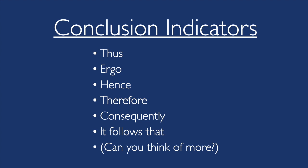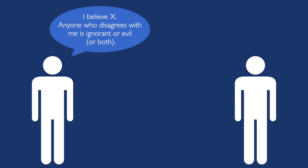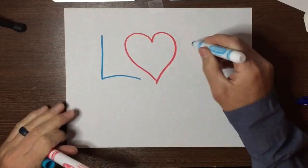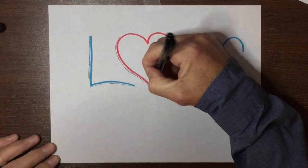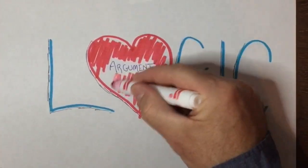Indicator words help identify the conclusion, though be careful — some words help you spot the reasons being offered, not the conclusion. Not every argument uses indicator words, and not every attempted argument manages to be an argument. Some people just state what they believe without giving reasons, which can sound convincing but is really just bluster. Arguments are pieces of language that express our reasoning, and since logic is the investigation of the standards of correct reasoning, arguments are at the very heart of logic.